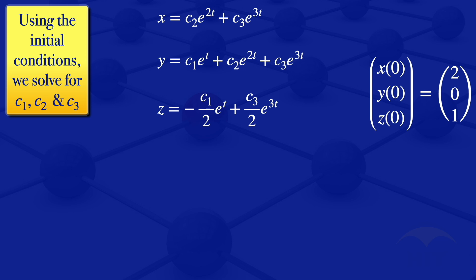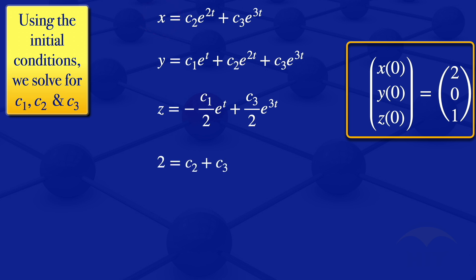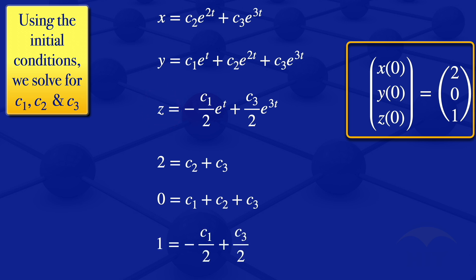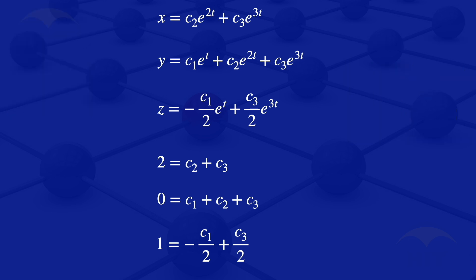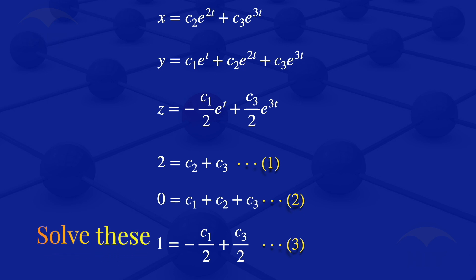We now apply the initial conditions to solve for the constants c1, c2, and c3. Setting t equals 0 in each equation: x(0)=2 gives c2 plus c3 equals 2; y(0)=0 gives c1 plus c2 plus c3 equals 0; and z(0)=1 gives minus c1/2 plus c3/2 equals 1. We label these equations one, two, and three, then solve them simultaneously.